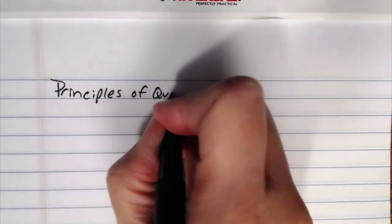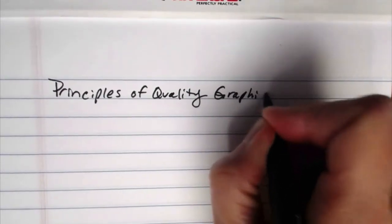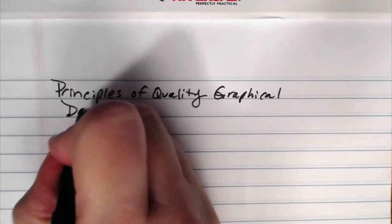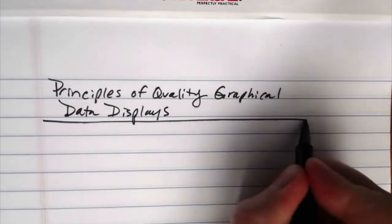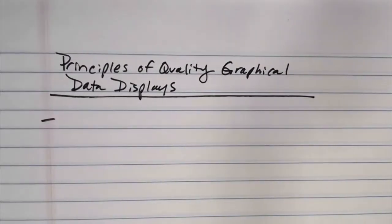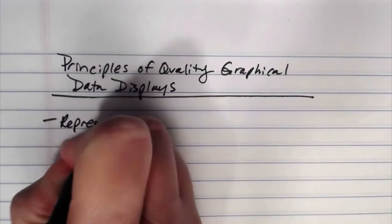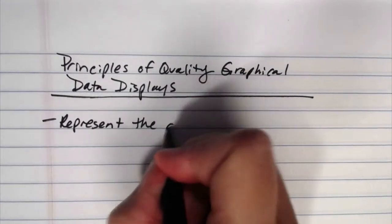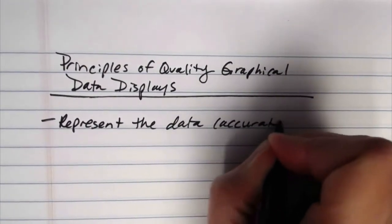If we want to talk about principles of quality graphical displays of data, here's what we want to think about. Thing one, a quality graphical data display should represent the data accurately.